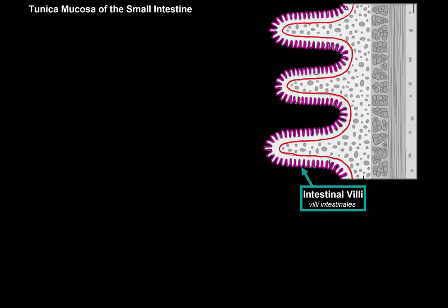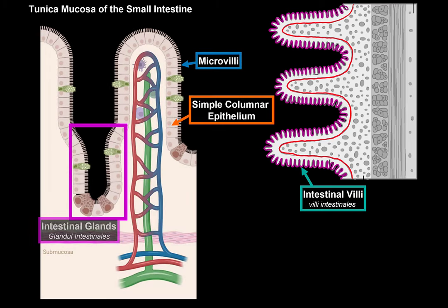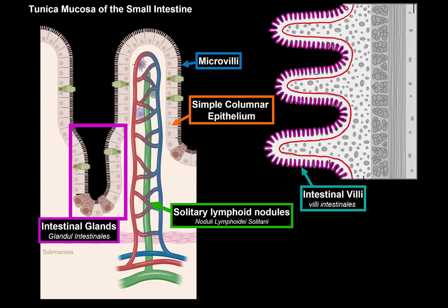The circular folds get help with absorption through small finger-like projections called intestinal villi. These villi are lined with highly specialized simple columnar epithelial cells for absorption, and each has hair-like structures called microvilli on the surface that contract to pull nutrition closer to the cells. Between each villus are glandular depressions called intestinal glands, which contain cells that lubricate the lumen and produce digestive enzymes. Inside each villus we have solitary lymphoid nodules as part of immunity, and in some places in the small intestine these aggregate together to form aggregated lymph nodules.